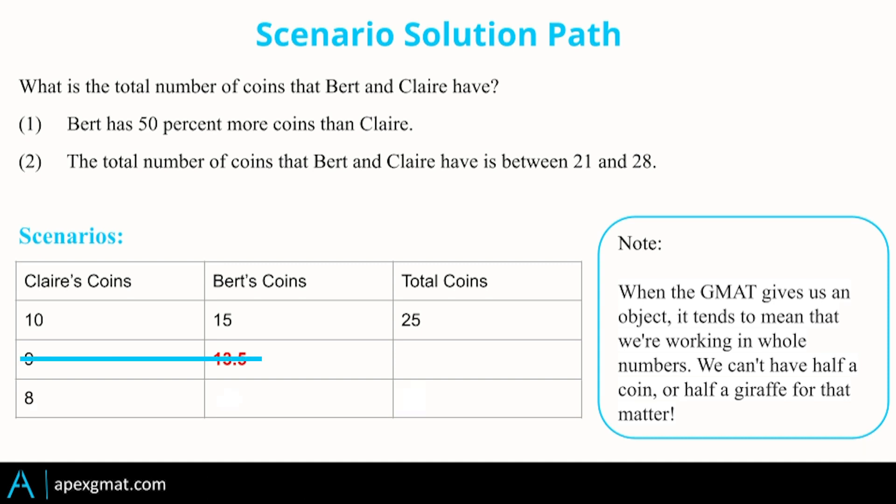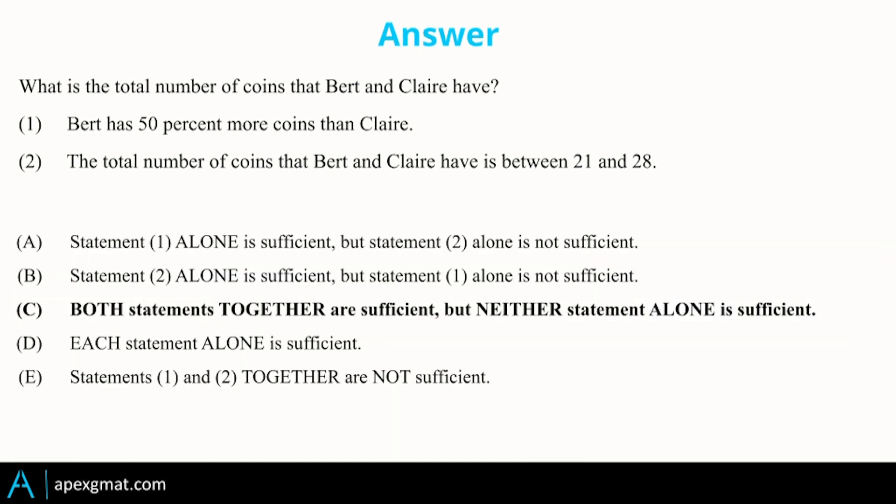So nine is out. What if Claire has eight coins? Then Bert has 12. That brings us to 20. That's below our range. We already know 10 and 15 bring us to 25. That's the first one in our range. If Claire has 12 and Bert has 12 plus 6, 18. That brings us to 30. That's on the other side of the range. So the only viable scenario is the 25. Therefore answer C, both together are sufficient.